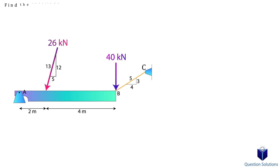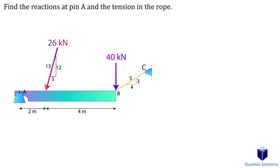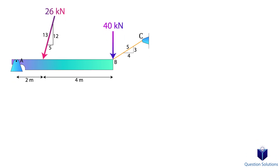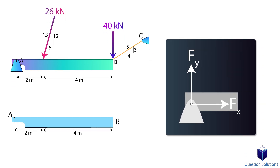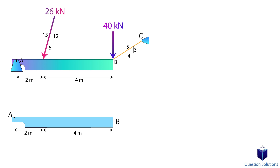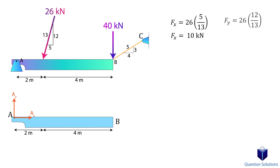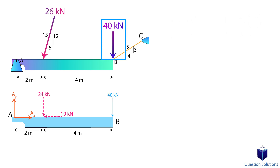Let's take a look at this problem where we need to find the reactions at pin A and the tension in the rope. The first step is to draw a free body diagram. Since we have a pin at A, we know there will be two reactions: Ax and Ay. Next, we look at the forces in our diagram. We have a 26 kN force broken into its x and y components, then a 40 kN force straight down, and lastly the tension in the rope which can also be broken into its x and y components.